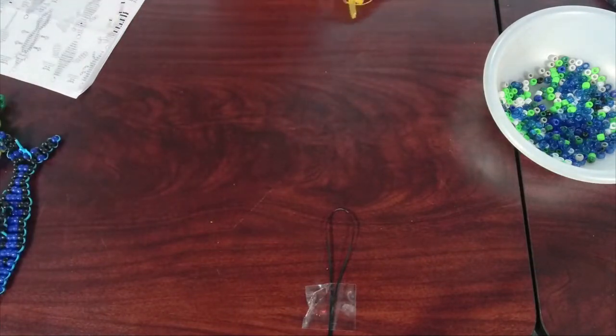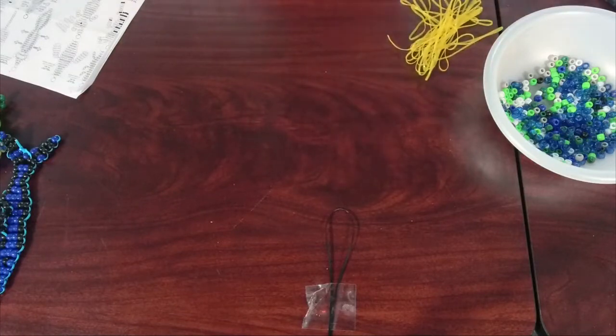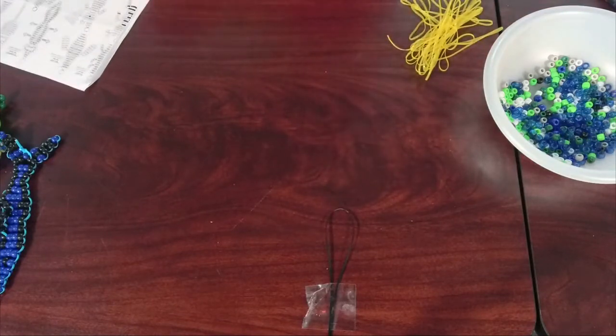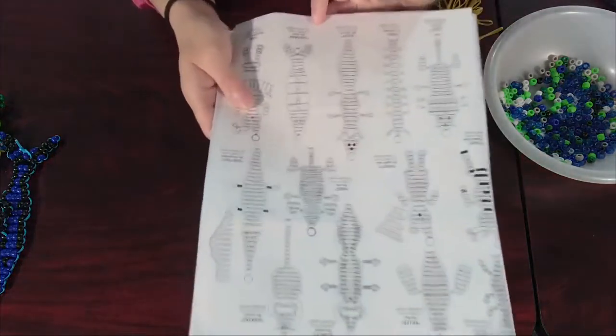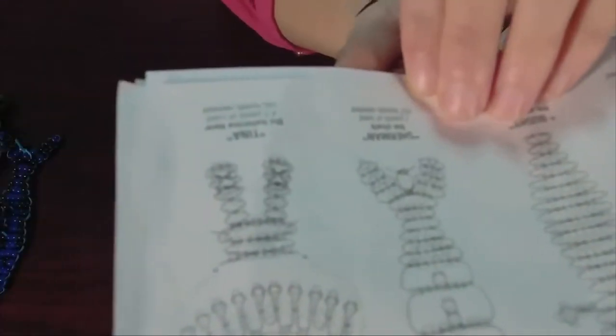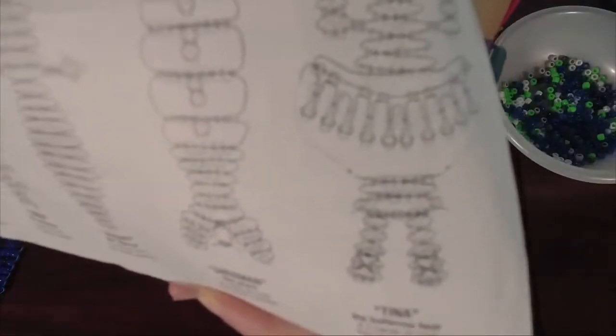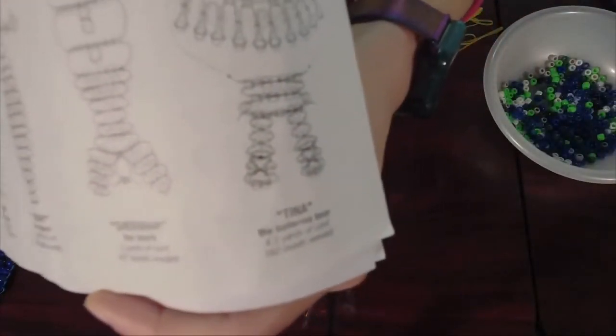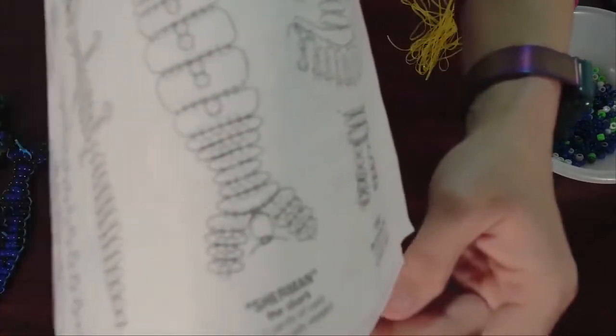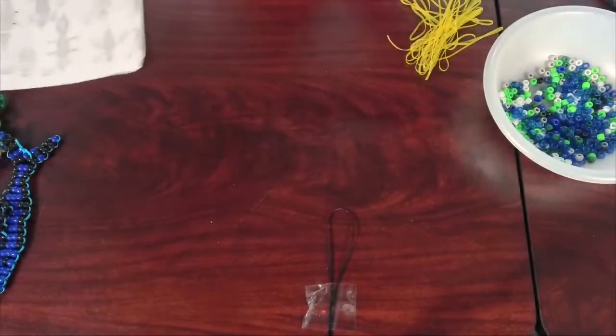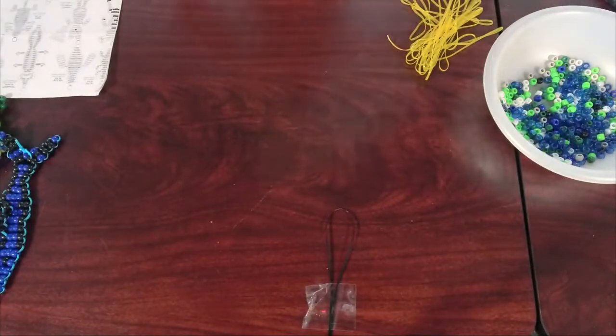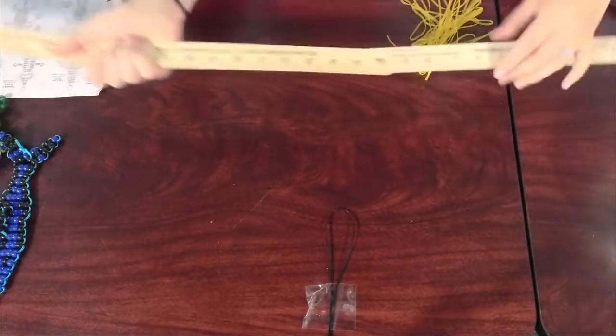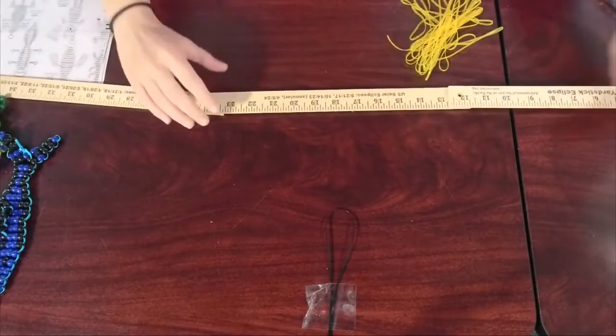To start, just like every other animal, we need to see how much cordage we need. Sherman the shark needs three yards of cord. That's nine feet, because three yards times three. So I'm just going to get some extra cord, because I don't want to use the black cord that's in the kit.